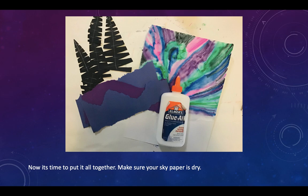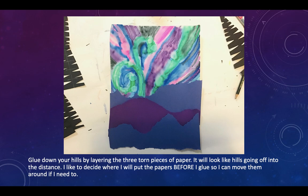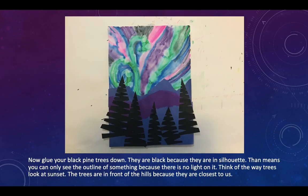Now it's time to put it all together. Make sure your sky paper is dry. Glue down your hills by layering the three torn pieces of paper — it will look like hills going off into the distance. I like to decide where I will put the paper before I glue, so I can move them around if I need to.